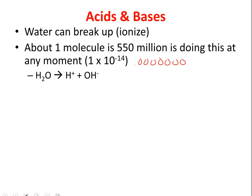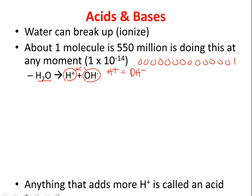That's thirteen zeros and a one — how many water molecules would be doing this per a huge number of water molecules. But when it does happen, it breaks into H+ and OH−. These two things are equal to one another — hydrogen ions and hydroxide ions. The H+ would equal the number of OH− ions, which makes sense because if a water molecule breaks, it has to break into exactly one of each.